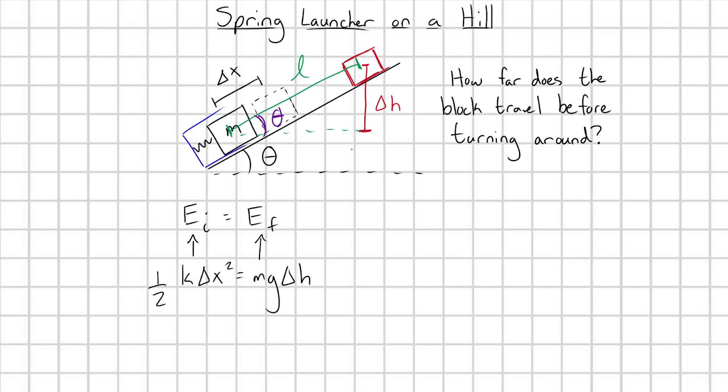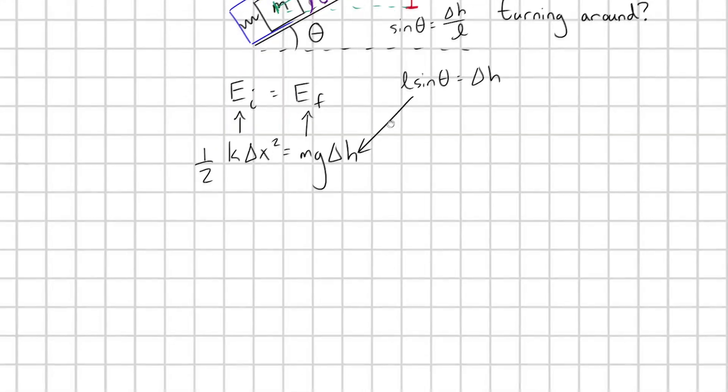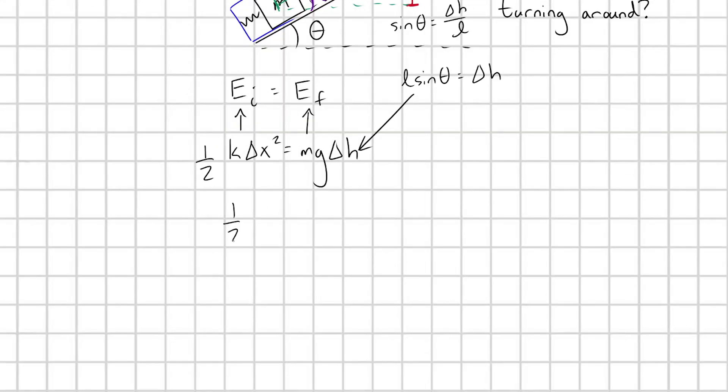So basic trigonometry, sine theta is going to be equal to delta h over L, or L sine theta is equal to delta h. Let's plug this right in for delta h. And so we're going to have one half k delta x squared is equal to mgl sine theta.